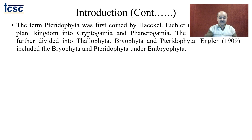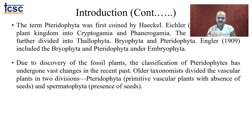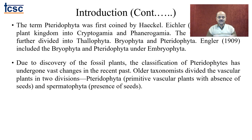Due to the discovery of fossil plants, the classification of pteridophytes has undergone vast changes in recent times. Older taxonomies divided vascular plants into two divisions: pteridophyta — primitive vascular plants — and spermatophyta — presence of seeds. They were clear that there are two groups: primitive vascular plants with absence of seeds and highly advanced plants with presence of seeds, and that is how pteridophyta and spermatophyta were divided.